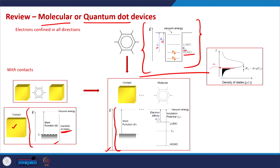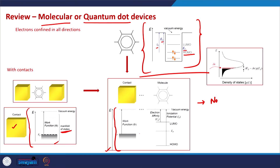Soon after we put these two systems in touch with each other they will reach equilibrium. Equilibrium means that every process is balanced by the counter process, and the Fermi level in the entire system must be uniform. In order to make this Fermi level uniform across the contact-molecule system, electron transfer takes place.